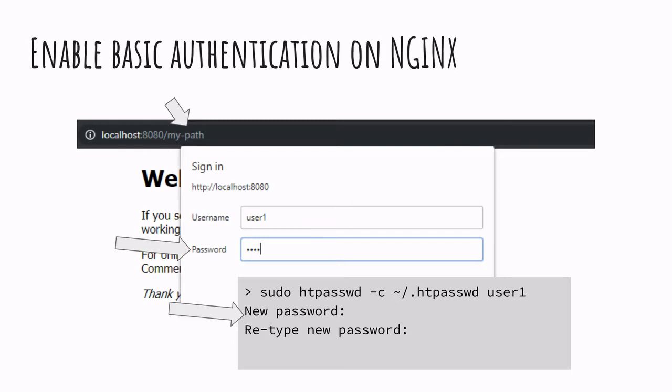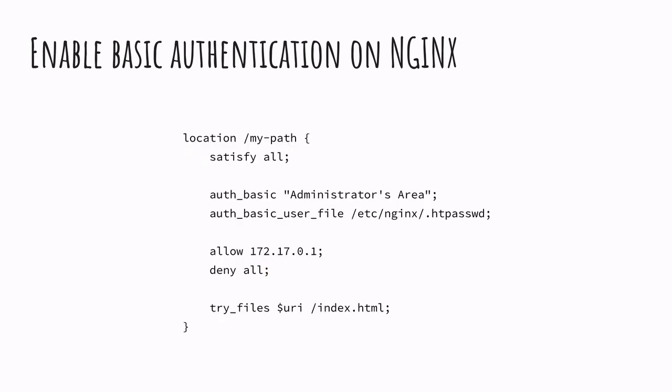As an additional security layer, together with basic authentication, we can also use allow and deny directives from Nginx, which gives us a way to filter IP addresses — allowing certain IPs to access the endpoint and preventing certain IPs from being able to access the endpoint.